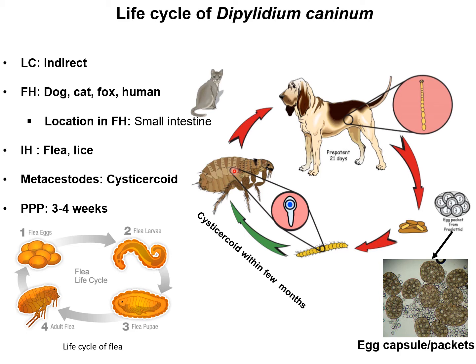In humans, particularly children, infection is acquired by accidental ingestion of flea or lice while playing with them. Afterwards, cysticercoids are released in the intestine of the final host, and a mature parasite develops from the cysticercoid.